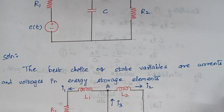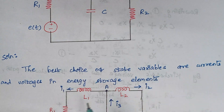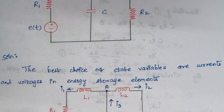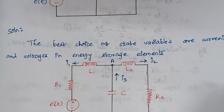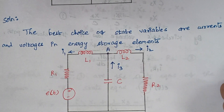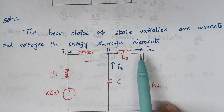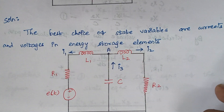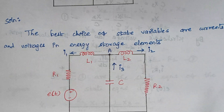The best choice of state variables are currents and voltages in energy storage elements. What are all the energy storage elements? Inductors and capacitors are known as energy storage elements. So here we are going to consider those energy storage elements as state variables — that is, we will be considering the currents and voltages in the energy storage elements.